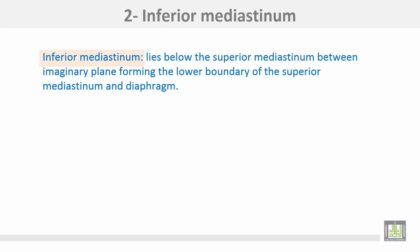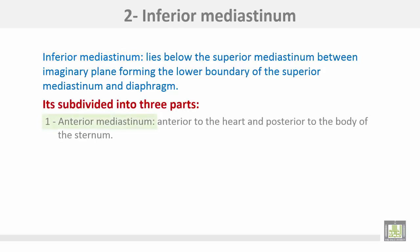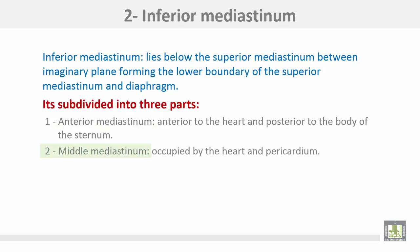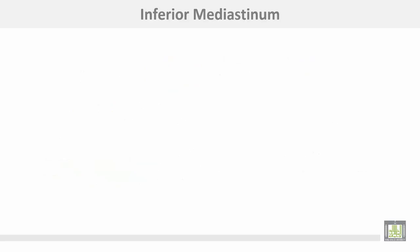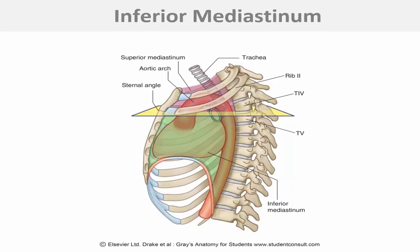The inferior mediastinum lies below the superior mediastinum, between the imaginary plane forming the lower boundary of the superior mediastinum and the diaphragm. It is subdivided into three parts: the anterior mediastinum, anterior to the heart and posterior to the body of the sternum; the middle mediastinum, occupied by the heart and pericardium; and the posterior mediastinum, posterior to the heart and pericardium and anterior to the lower thoracic vertebrae.